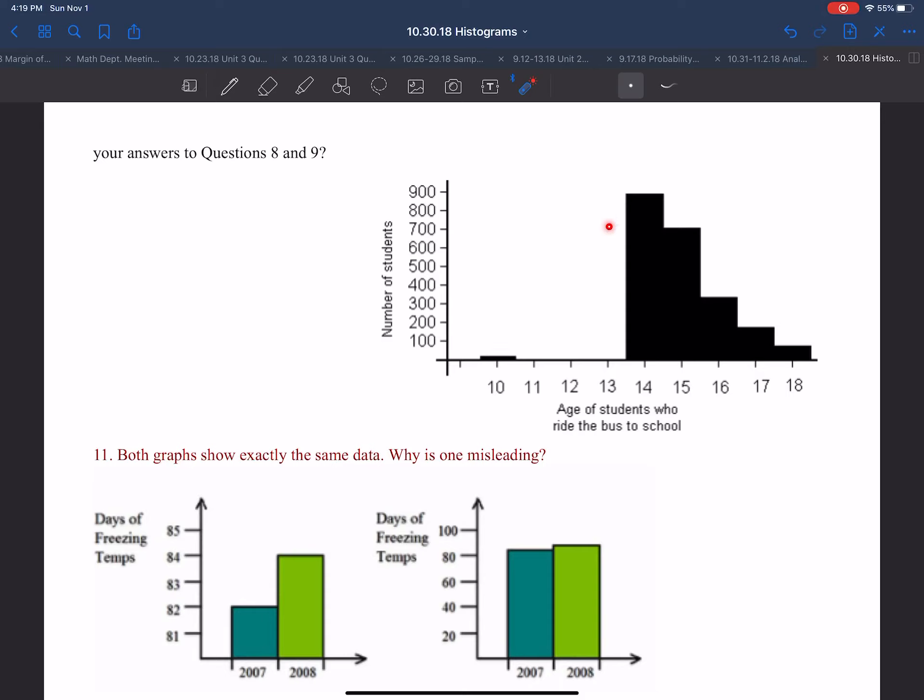Well, this looks like it used to be the original graph. But now we've got a data point all the way down here at 10. And this is high school students who ride the bus. So there's either got to be something wrong, because a 10 year old should not be riding a high school bus, right? So we can say there was either an error in the data, or there is a really smart 10 year old going to high school.